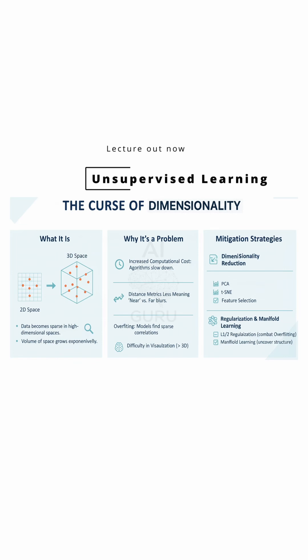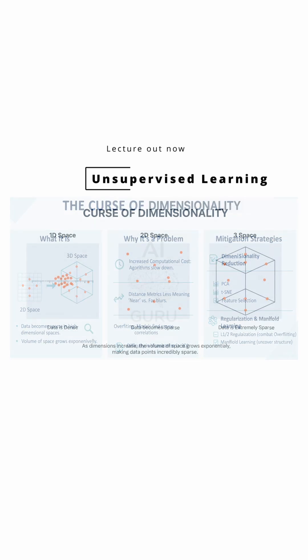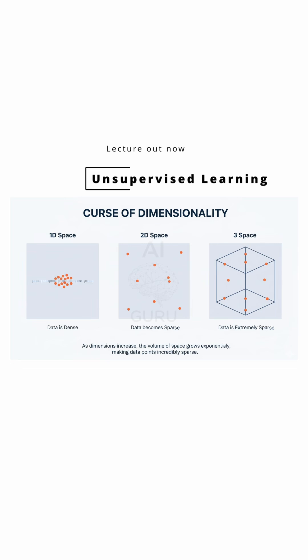Think of it conceptually, right? If you live on a single line, one dimension, finding your neighbor is easy. Move to a flat plane, two dimensions, the space expands, but it's still manageable.